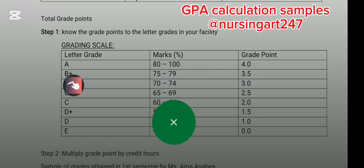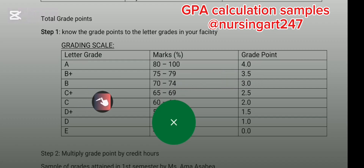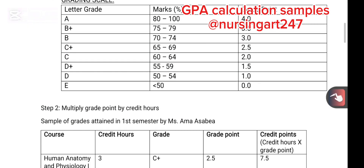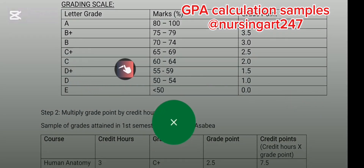When you get an A, it means you had 80 to 100 percent in your continuous assessment, and it is 4.0. B+ is 75 to 79 percent and it is 3.5. Look at the grades and pick the grade point that matches the letter grade you had at the end of your semester — that is what you will use for the calculations that follow.